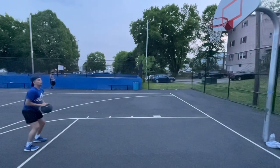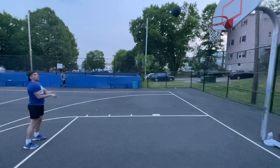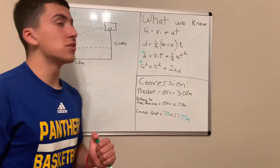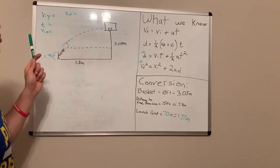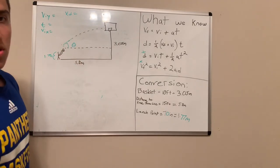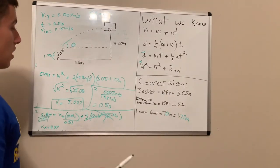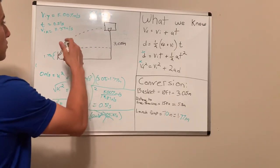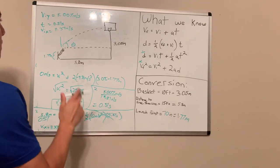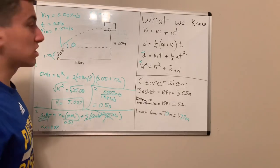I then shot a free throw using a different form, meaning there are going to be different variables for the release. As you can see, I missed the shot. With our new launch point of 70 inches or 1.77 meters, I will find the velocity in the y-direction, the time at the top of the trajectory, the velocity in the x-direction, and the diagonal velocity — all to find the angle theta. The velocity in the y-direction is 5.007 m/s, the time at the top of the trajectory is 0.51 seconds, and the velocity in the x-direction is 11.37 meters per second.